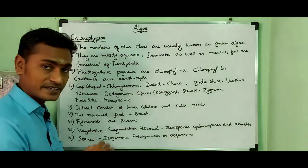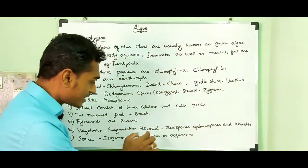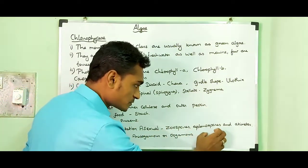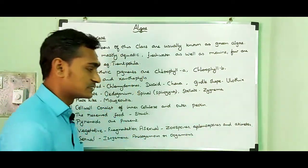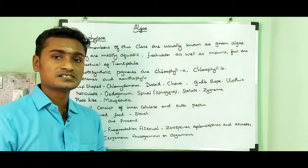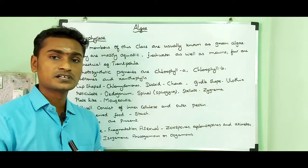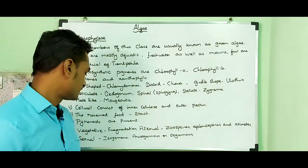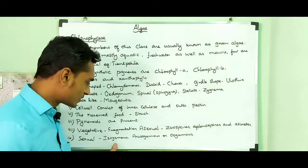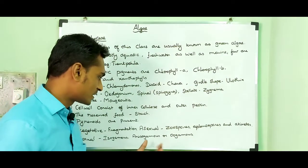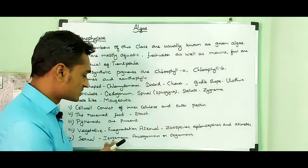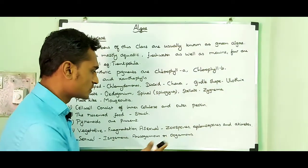Vegetative reproduction takes place by means of fragmentation. Asexual reproduction takes place by means of zoospores, aplanospores and akinetes. Akinetes are resting spores — they can store starch and during favorable conditions become a new individual. Sexual reproduction takes place by isogamy, anisogamy and oogamy.